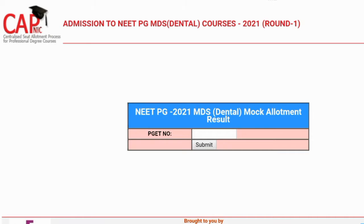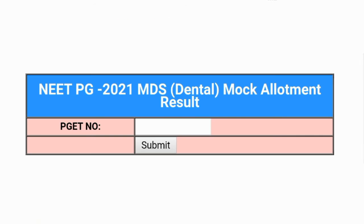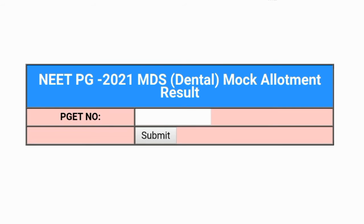E page open agathe illi nimdhu details enter maadi — that is NEET PG 2021 MDS Dental Mock Allotment Result. PGET number haakki submit until click maadi. Submit takshanin nimi result na nodko bodhu.